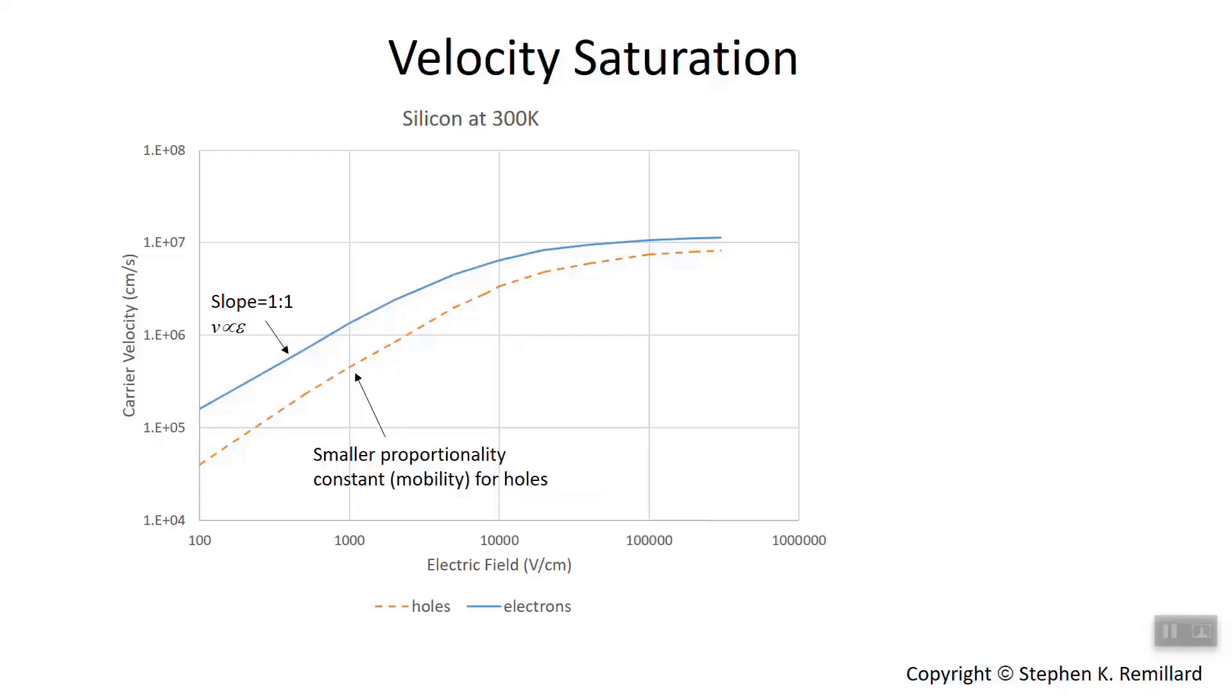The effect of electric field on carrier velocity, we expect it to be linear. Velocity equals mobility times the electric field. It should be a straight line when you plot velocity versus the electric field. This leveling off is called velocity saturation. It happens somewhere around 10 to 100,000 volts per centimeter with a velocity in this range of up to 1 times 10 to the 7 centimeters per second.